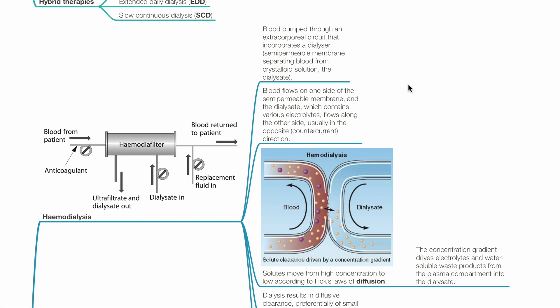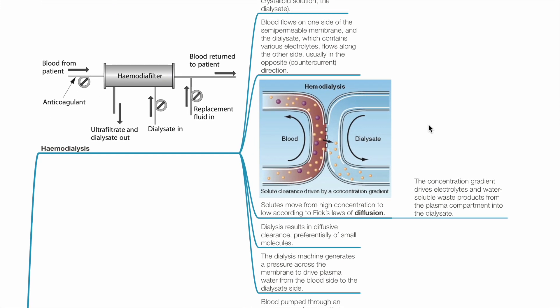Blood flows on one side of the semi-permeable membrane, and the dialysate, which contains various electrolytes, flows along the other side, usually in the opposite or counter-current direction. Solutes move from high concentration to low concentration according to Fick's law of diffusion. The concentration gradient drives electrolytes and water-soluble waste products from the plasma component into the dialysate. Dialysis results in diffusive clearance, preferentially of small molecules.